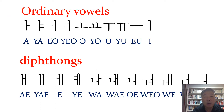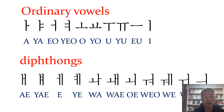In vowels, there are two kinds of vowels: the ordinary vowels and the diphthongs. Diphthongs are a bit tricky, but you can do it. The ordinary vowels are: a, ya, o, yo, o, yo, u, yu, ı, i. And diphthongs are: a, ye, a, ye, wa, we, we, o, we, i.